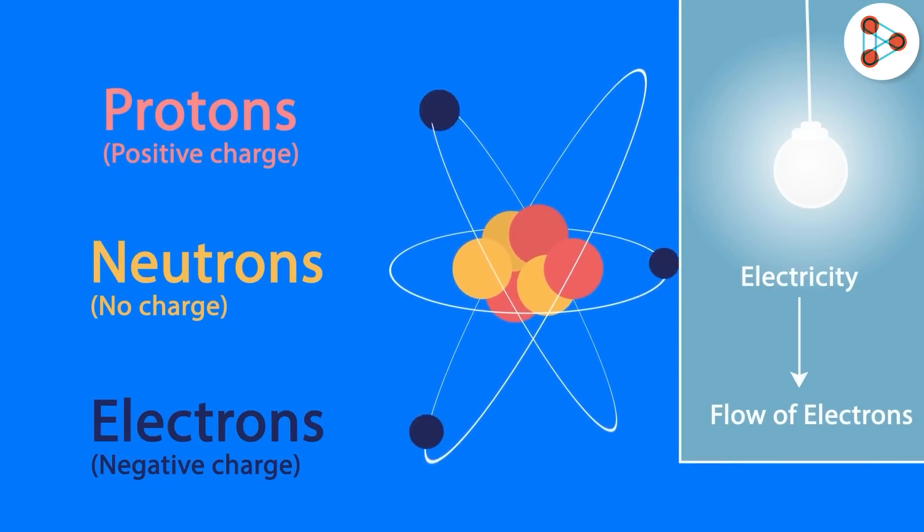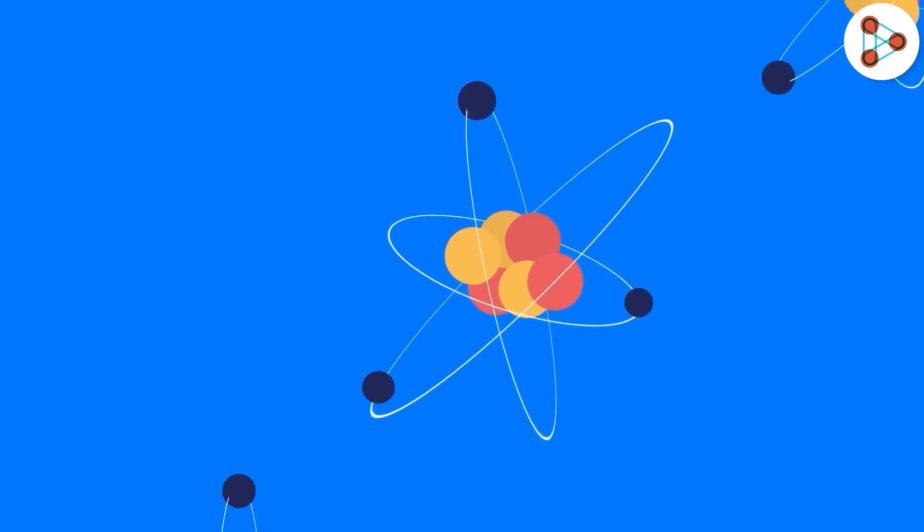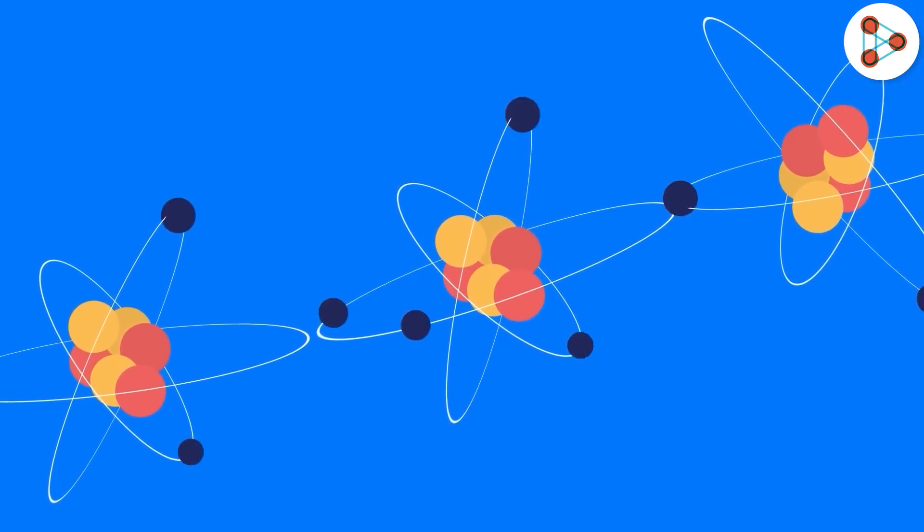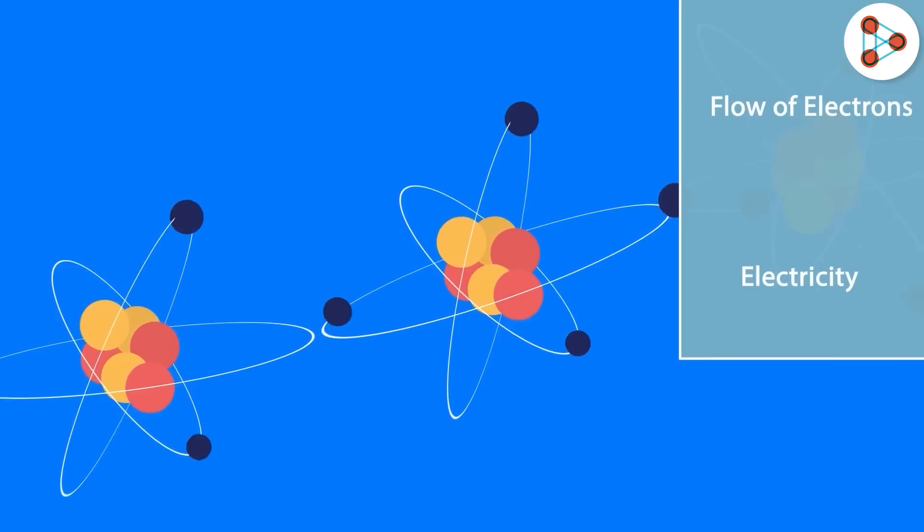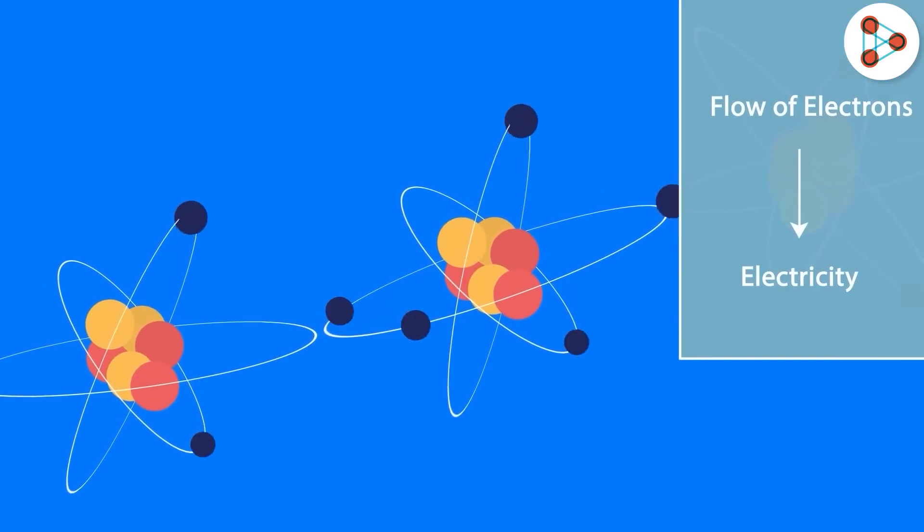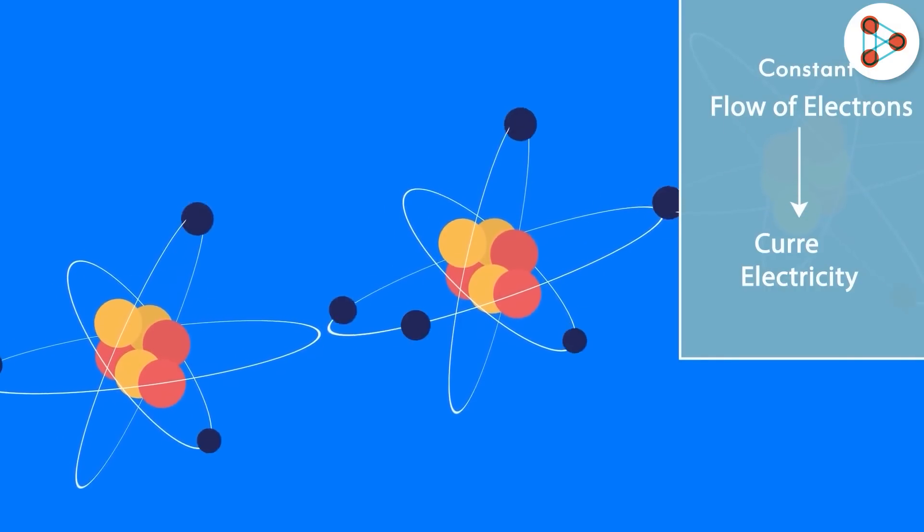Flow of electrons. Do I mean electrons flowing in their existing orbits? Not really. I am talking about electrons moving from one atom to the other, and so on. Yes, this flow of electrons is what constitutes electricity. The charges are constantly flowing. It's also known as current electricity.